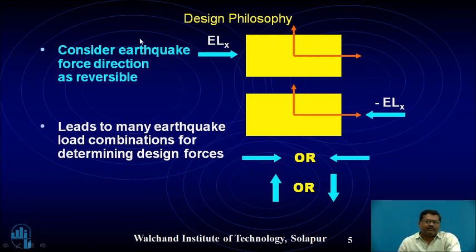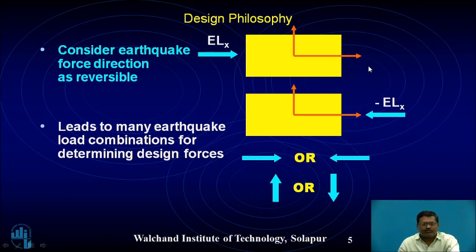Earthquake forces are reversible because they are periodic in nature. ELX when considered in the direction of x is denoted as positive force, and when the direction changes it is denoted as negative — meaning minus ELX is opposite to the first direction.